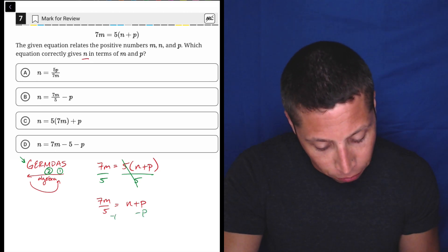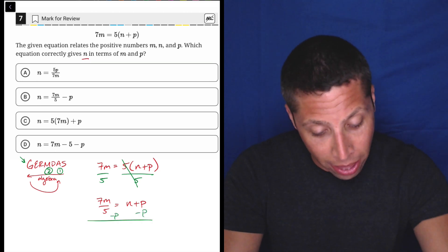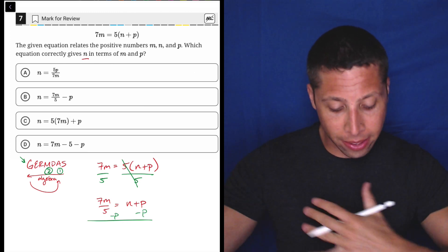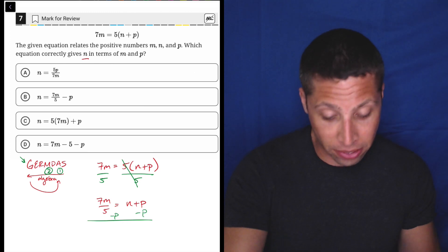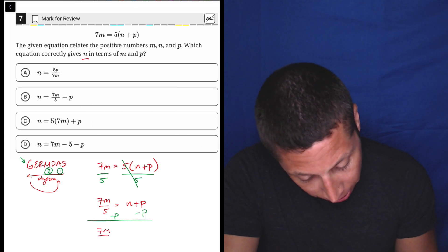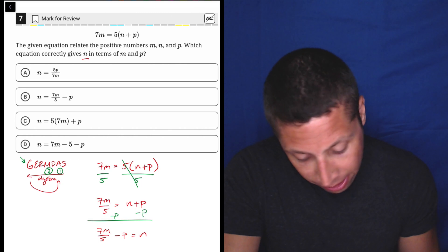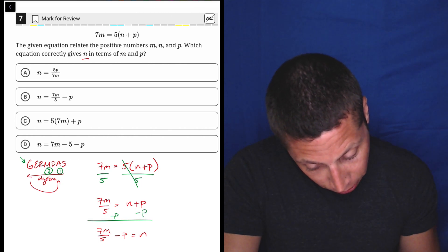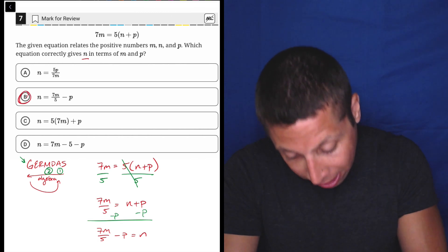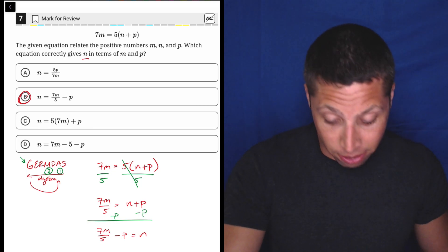So we can subtract p from both sides. And when we do that, since p is not the same kind of term as this seven-fifths m, we can just keep it separate. 7m over 5 minus p is equal to n, and that's kind of reverse, but 7m over 5 minus p is choice B. So there we go.